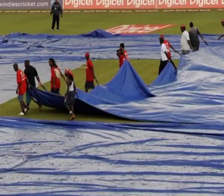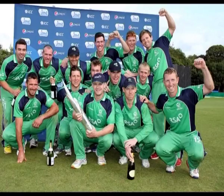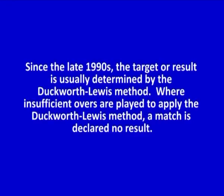Where a number of overs are lost, for example due to inclement weather conditions, then the total number of overs may be reduced. In the early days of ODI cricket, the team with a better run rate won, but this favoured the second team. For the 1992 World Cup, an alternate method was used of simply omitting the first team's worst overs, but that favoured the first team. Since the late 1990s, the target or result is usually determined by the Duckworth-Lewis method.